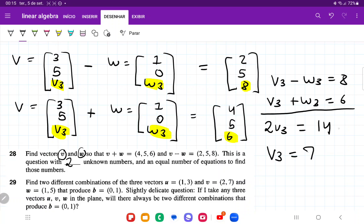If v3 equals 7, let's plug this into that equation. We have 7 plus w3 equals 6. Bringing the 7 to the right-hand side, w3 equals 6 minus 7 equals negative 1. I have now my last variables, so v3 equals 7 and w3 equals negative 1.